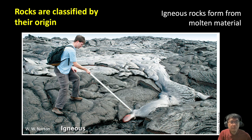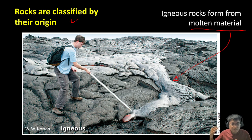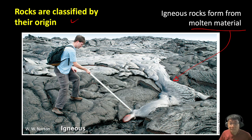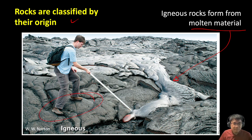As I mentioned in the previous video, rocks are classified by their origin. For igneous rocks, they form from molten material. For example, we have lava — a very hot, molten material. It originates from the deeper parts of the earth, and when it goes up and reaches the surface, it experiences a much cooler temperature. This molten material will eventually cool down, solidify, and become solid rocks, like the rocks that person is standing on.